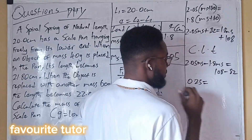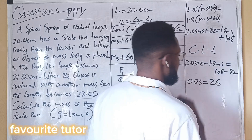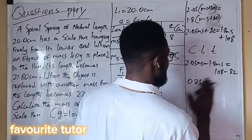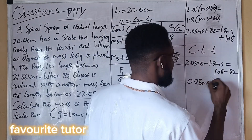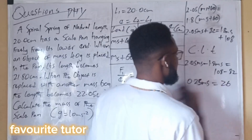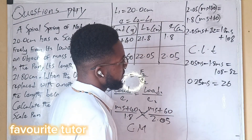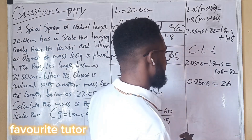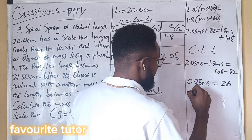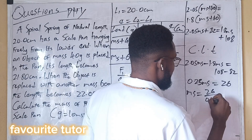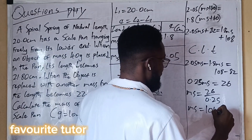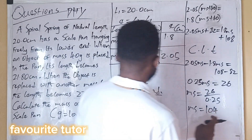So 0.25 times the mass of the scale pan equals 26. Therefore, the mass of the scale pan equals 26 divided by 0.25, which gives 104 grams.